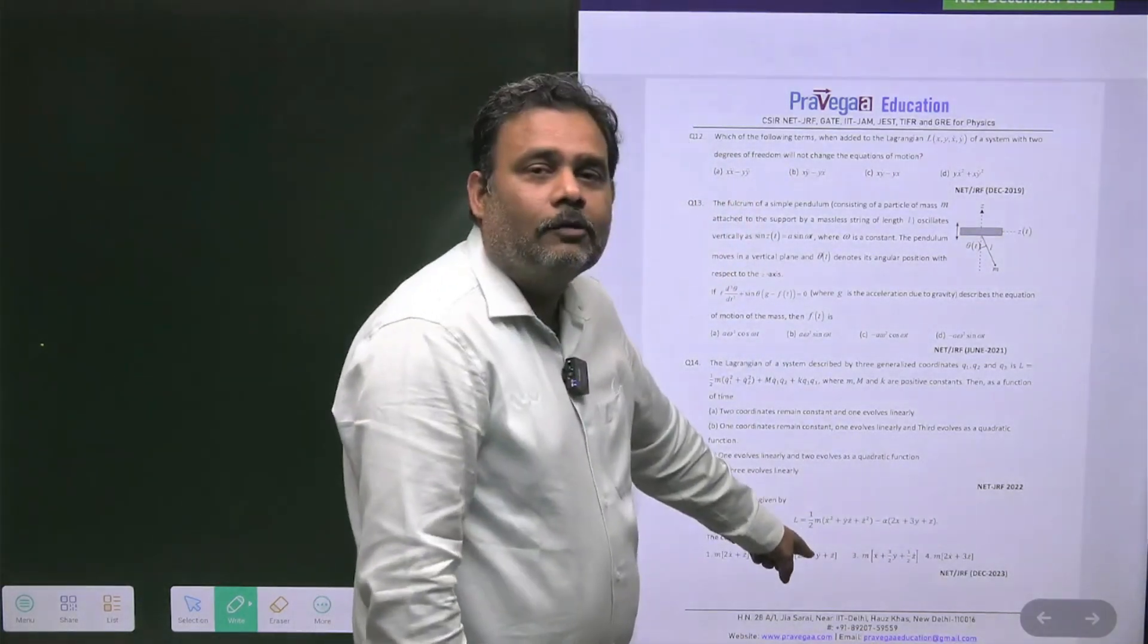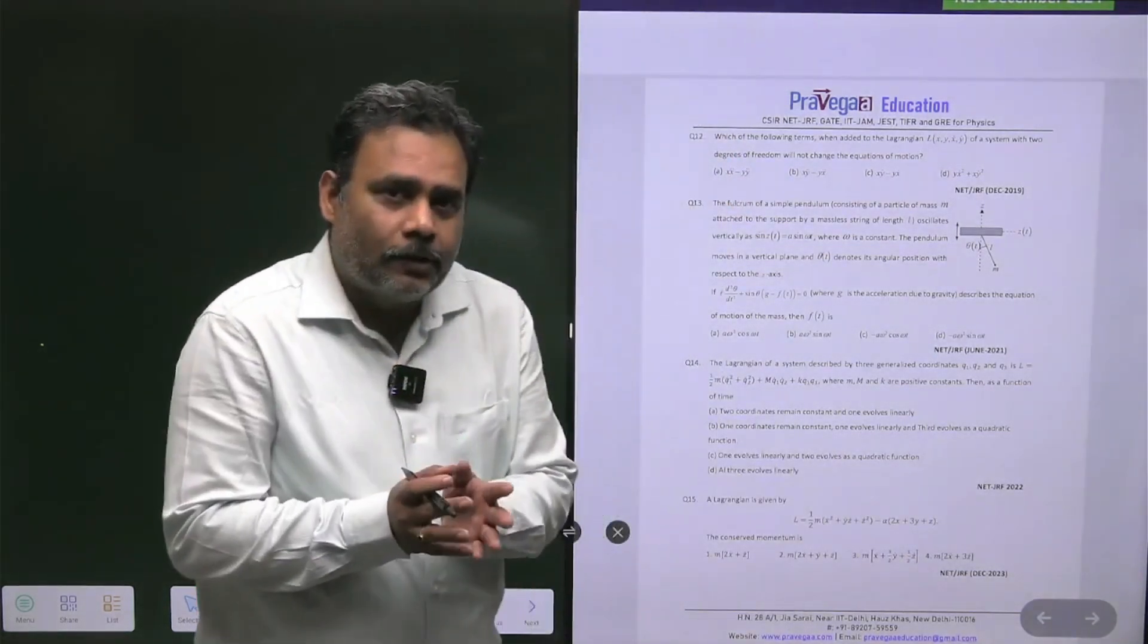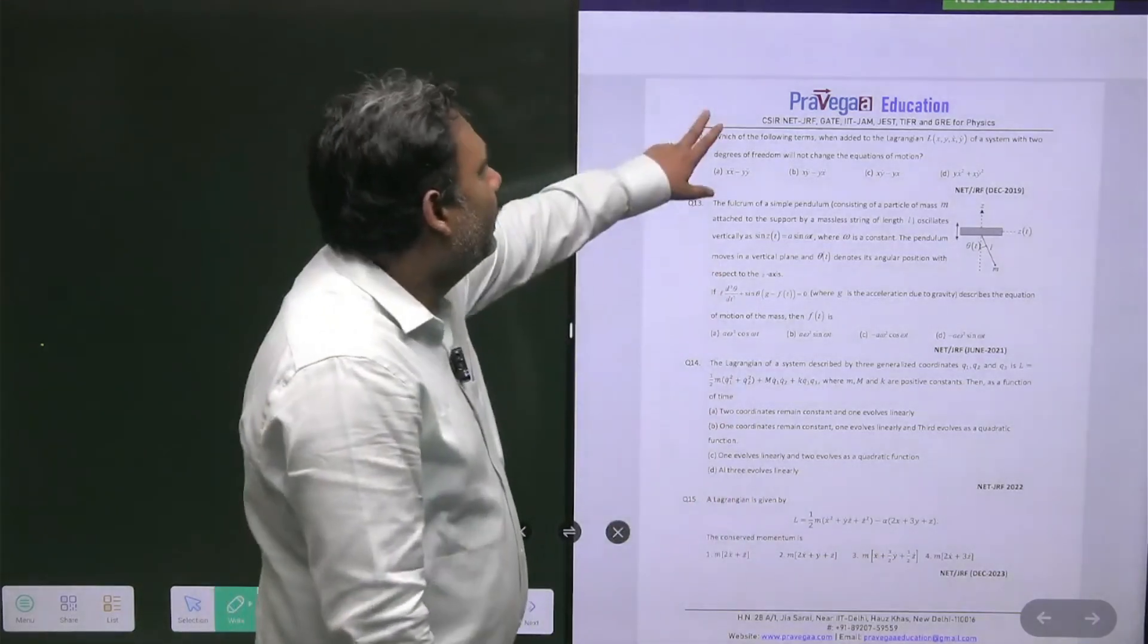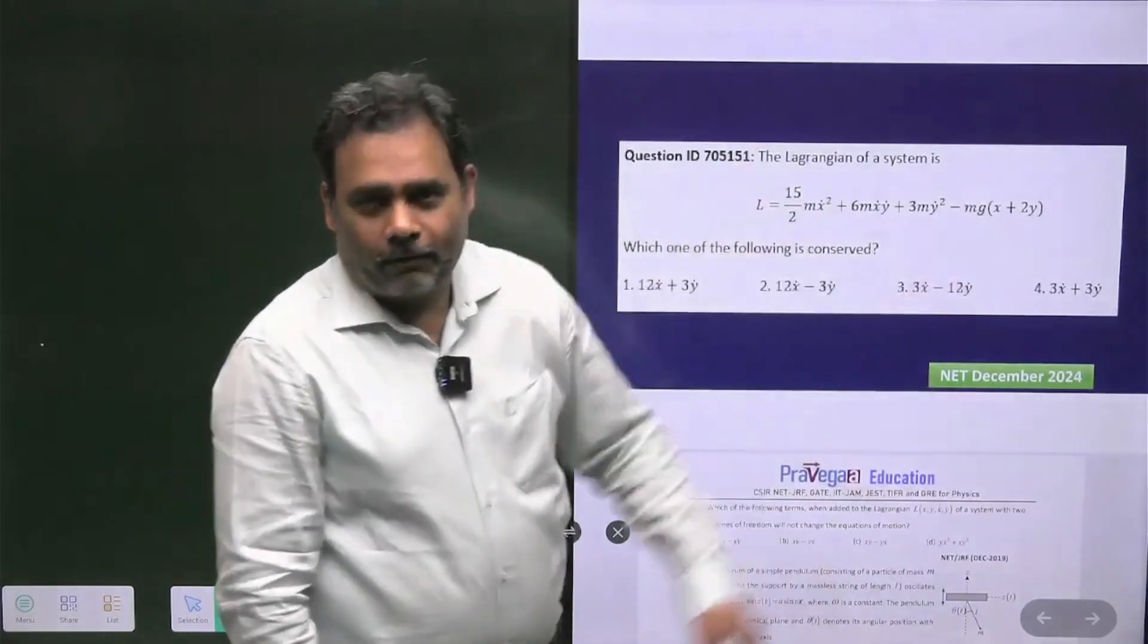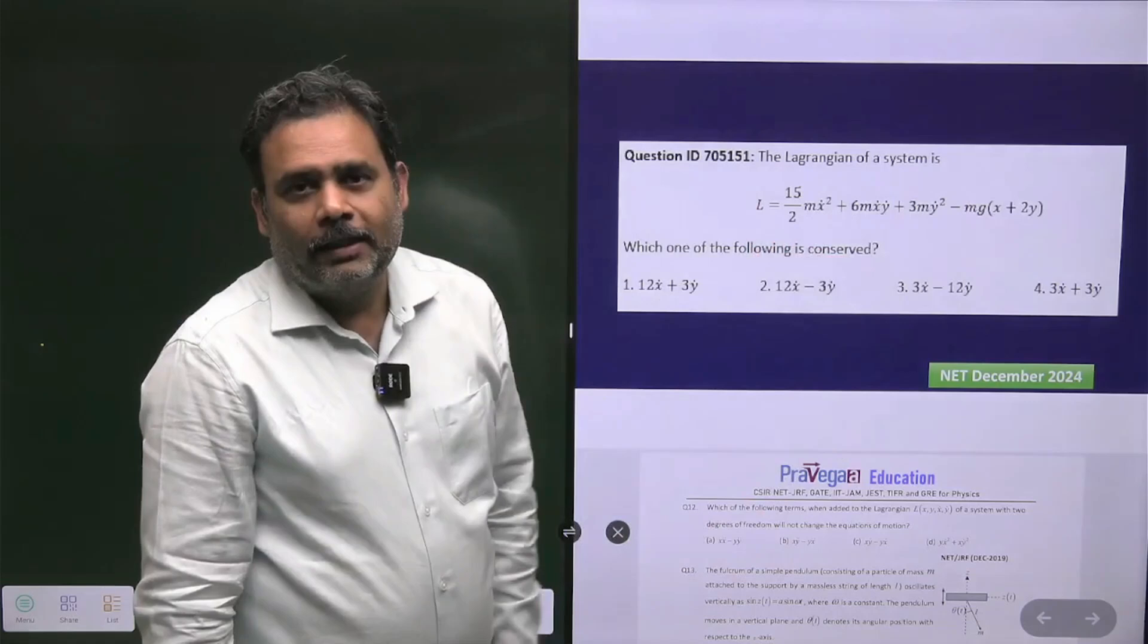The Lagrangian is given, the cross term is there, the potential is linear, and they're asking which one is conserved. If you focused on previous year questions and can solve this question efficiently, this is a cakewalk.